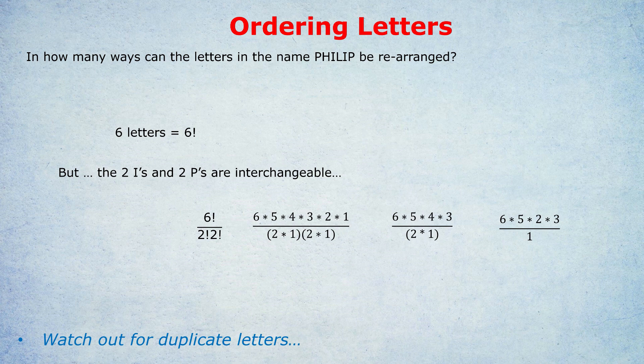I've cancelled it out with the four, leaving just one in the denominator and six times five times two times three in the numerator. Six times five is 30, times two is 60, times three is 180. So there are 180 ways to rearrange the letters in the name PHILIP. But if we've just done six factorial, what is that, 720? That would be a massive overestimate of the actual number of ways because we have duplicate P's and duplicate I's. Now I hope that makes sense because I'm now going to do some harder examples.